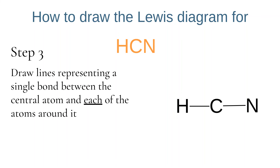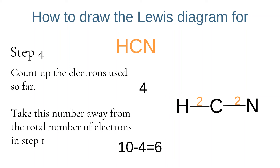We draw a line between each surrounding atom and the central atom to represent a single bond. In step 4, we count up the total electrons used so far. Because there are two single bonds, we have used 4 electrons. Taking this away from the 10 valence electrons gives us 6 electrons still to add to our Lewis diagram.